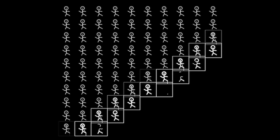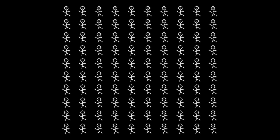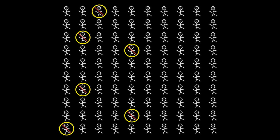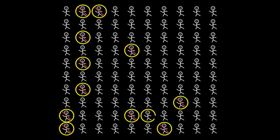Imagine you had 100 people and you need to decide who your ideal partner is. The rules are quite simple: you can speak to any number of people that you want to, although you can only speak to each person once. After speaking to somebody, you could decide to reject this person and speak to somebody else, although you can't go back and speak to somebody you've already rejected. Alternatively, you could accept this person as your ideal partner, at which point you would not get to speak to anybody else, and therefore the game would end here.